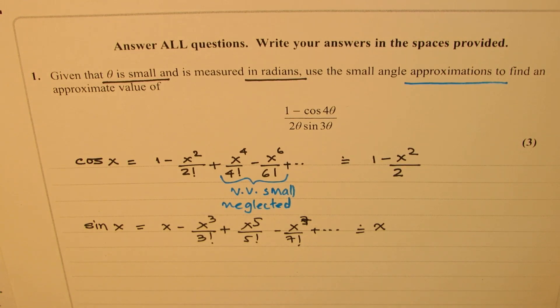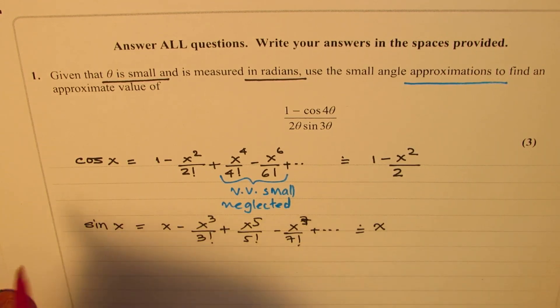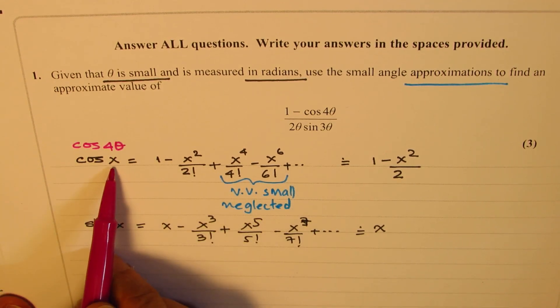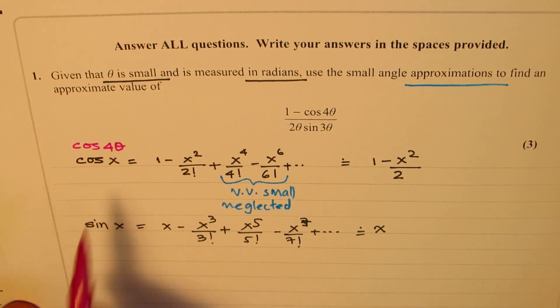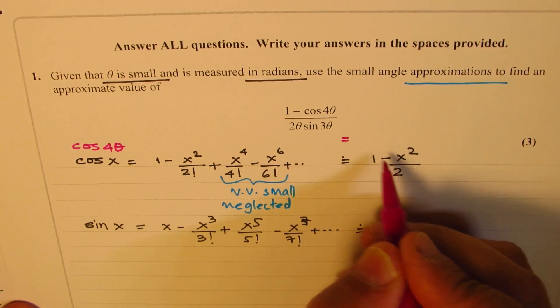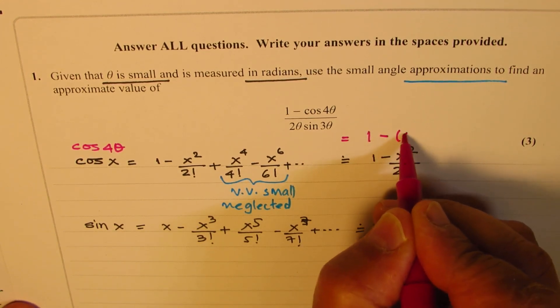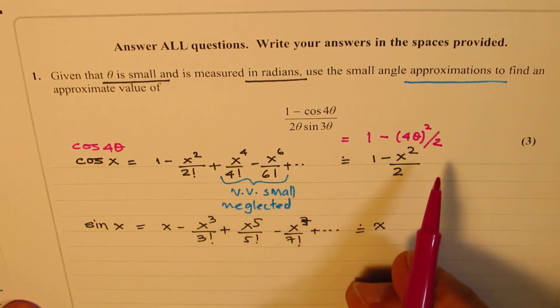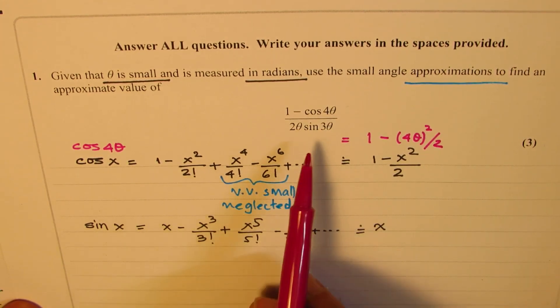So when we have, let me write down here so that you understand that if I am writing cos of 4 theta, I am basically replacing x with 4 theta. So therefore, this term will be 1 minus 4 theta whole squared divided by 2. Is that clear to you? So that becomes the numerator.